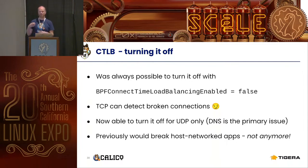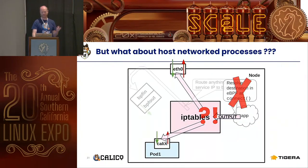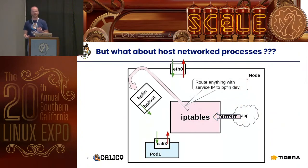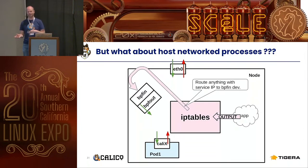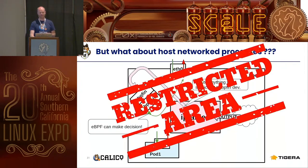For host network applications that need connect-based load balancing, what we can do is insert a veth pair into the host network address space. Everything coming from those applications is routed through that veth pair, and then we can hook it through eBPF and make a decision.